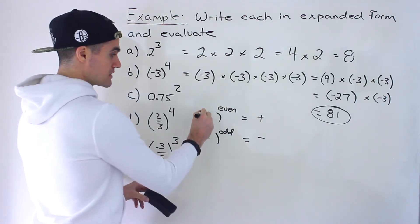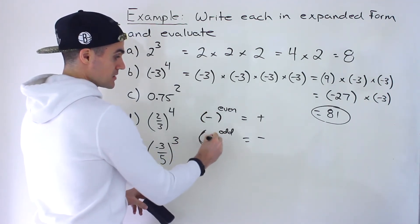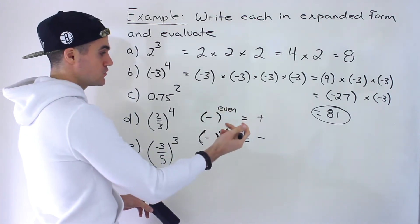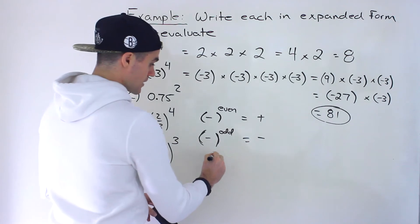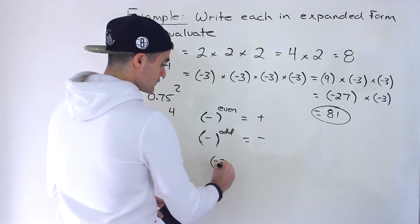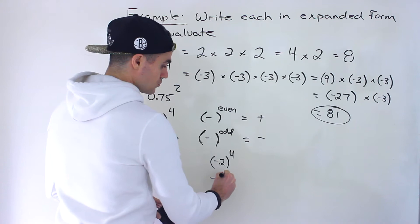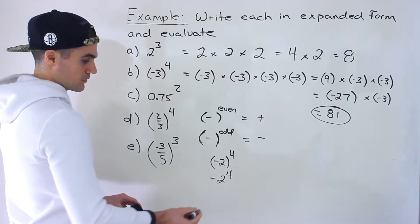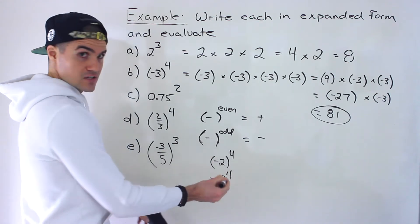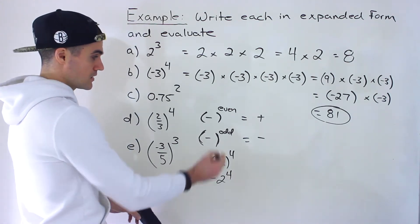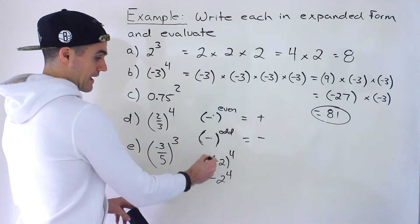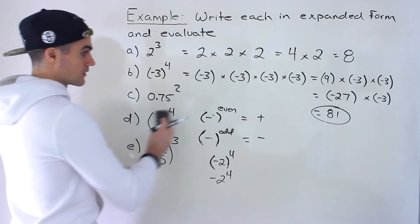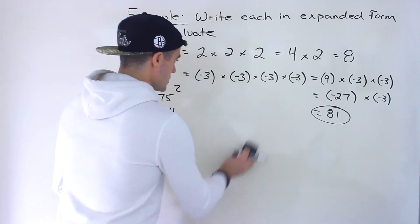You have to be careful here — this negative value has to be in brackets for this rule to hold. We're going to see in a future video how negative 2 to the power of 4 with brackets and without brackets give different answers. So make sure that base is in brackets, as it is in our example here.